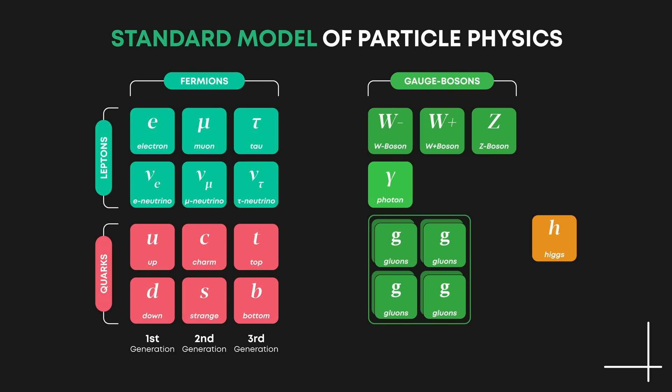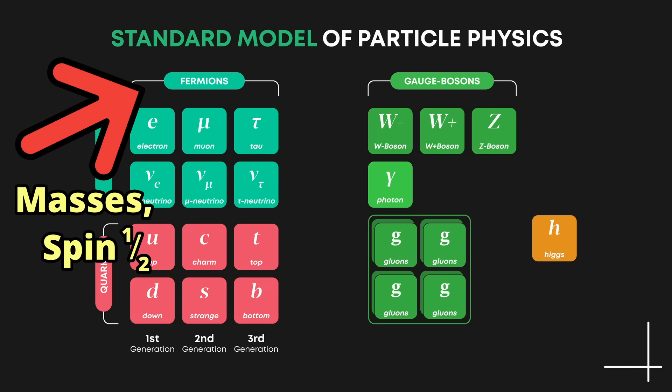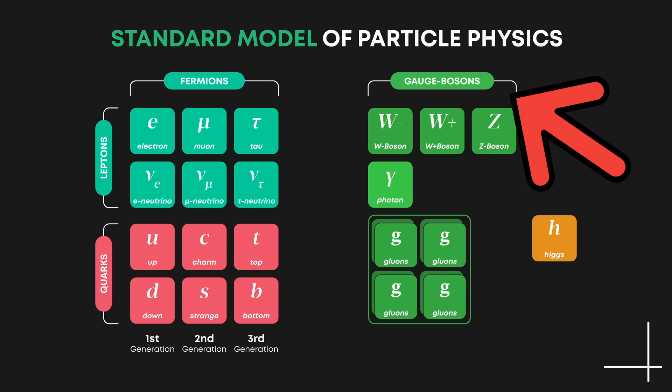To understand the causal fermion system, we first have to look at what's in the standard model. The particles in the standard model are either fermions or bosons. Fermions are particles like electrons or quarks. They have masses and they have spin one half. The bosons are the particles that mediate the forces between the fermions. For the electromagnetic force, that's the photon. For the strong nuclear force, that's the gluon. And for the weak nuclear force, we have the W and Z boson.